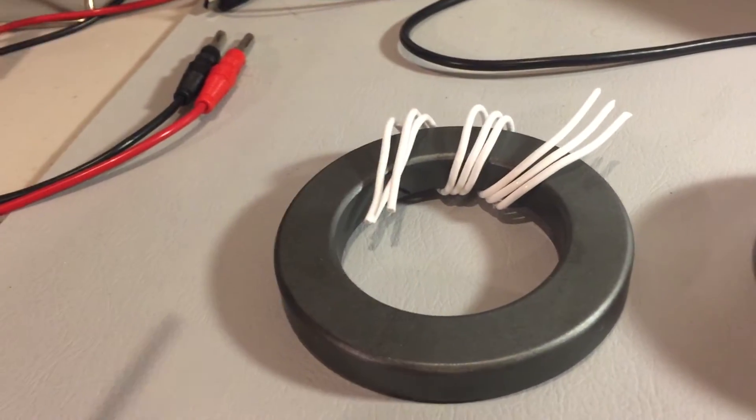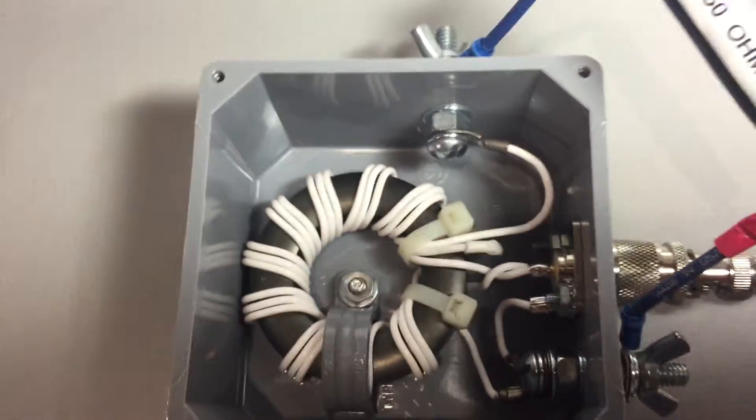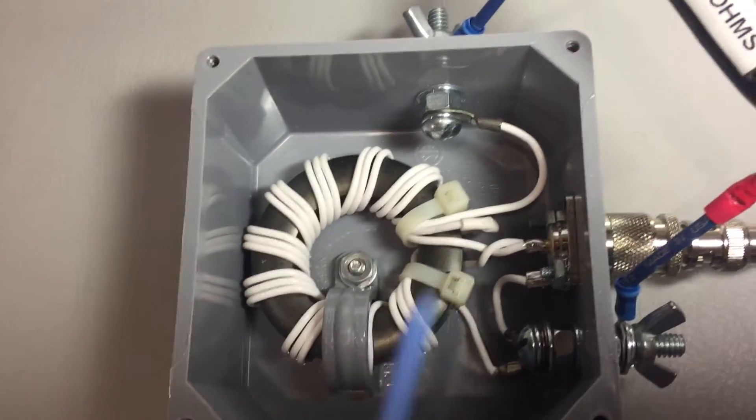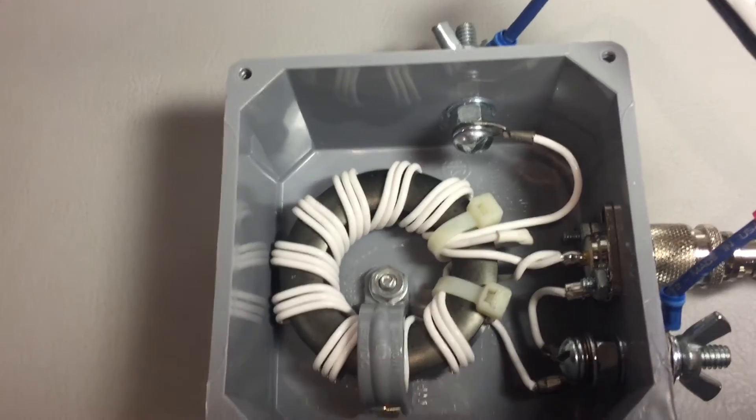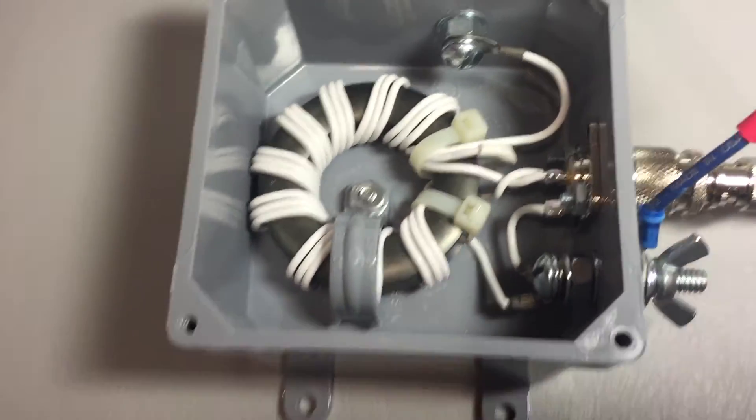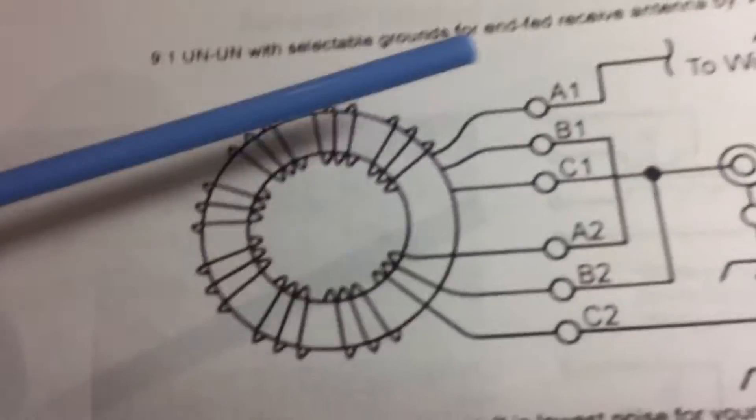So here's a larger toroid, here's a smaller one. The one that I've actually used for my 9 to 1 is a 2.4 inch, not quite as large as those others. And you can see how it's constructed. I'll get back to that in a moment. But this diagram is really easy to follow.